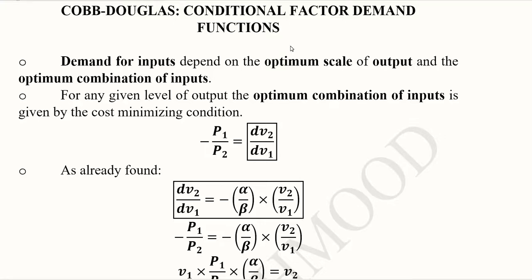This video is about the conditional factor demand functions of the Cobb-Douglas production function. The demand for input depends upon the optimum scale of output and the optimum combination of inputs.